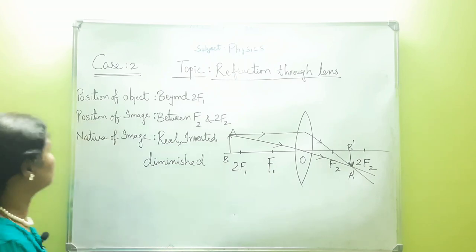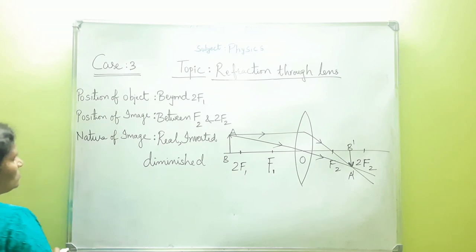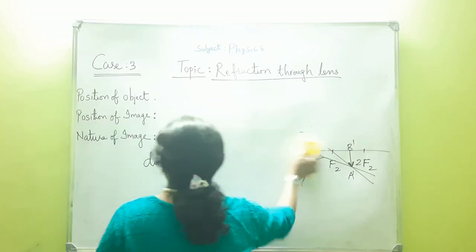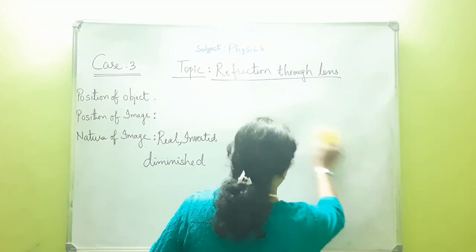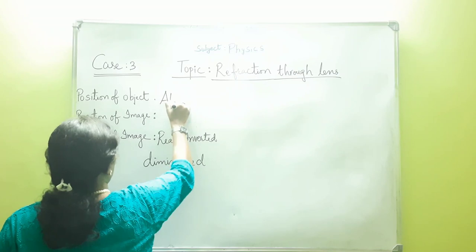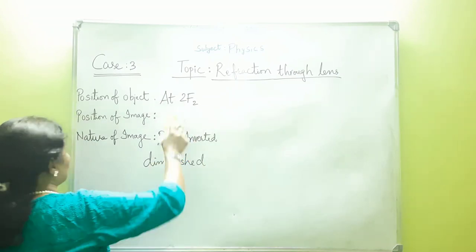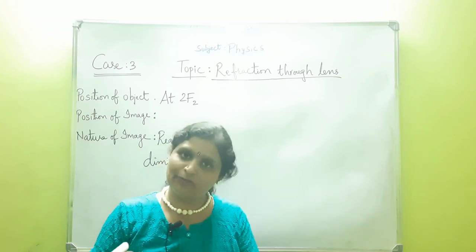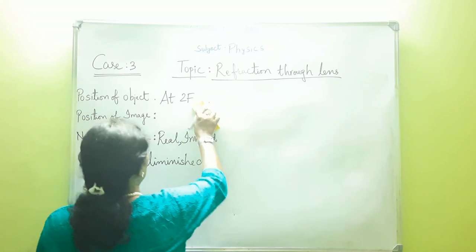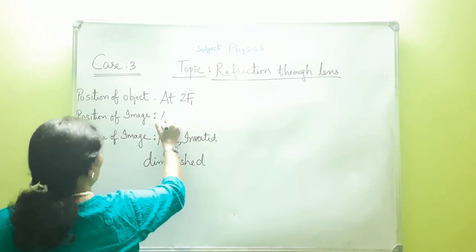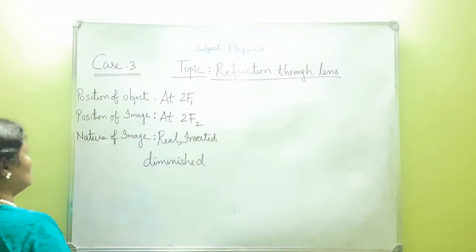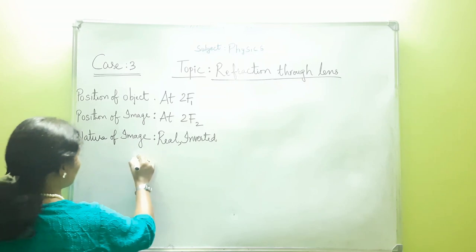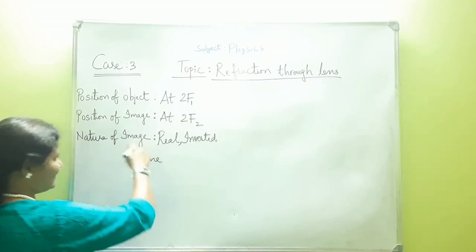Let us move on to case 3. In case 3, the position of the object is at 2F1. The image will be formed at 2F2. The nature of the image would be real, inverted and the same size as the object.